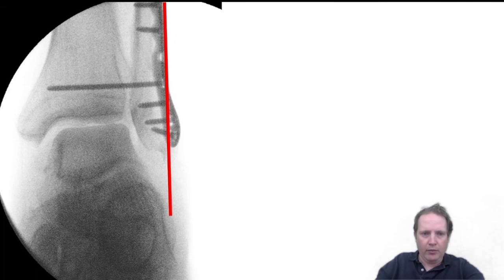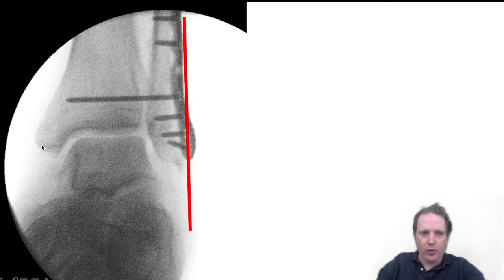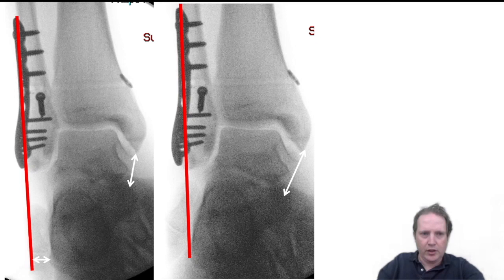The superficial deltoid repair uses just one anchor within the medial malleolus. Here is another case showing the same principle — you have tilt of the talus and subtalar instability, and as you can see the calcaneus then aligns back to the reference line.